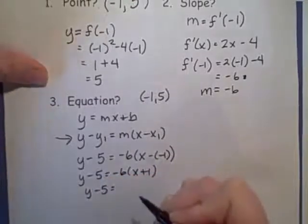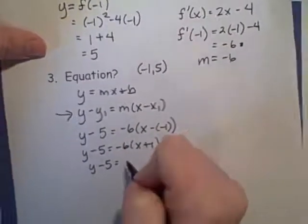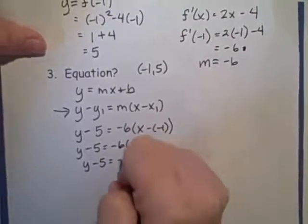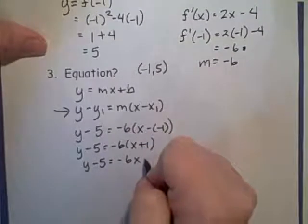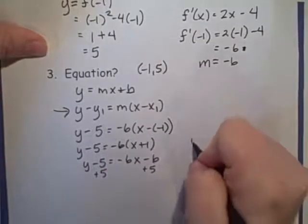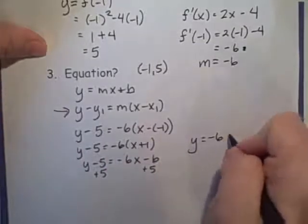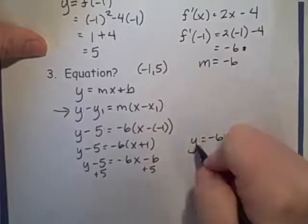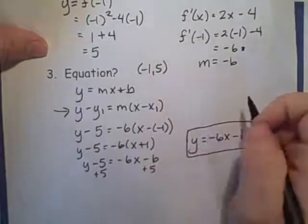Distribute that negative 6. And we get y minus 5 equals negative 6x minus 6, add 5, and I get y equals negative 6x minus 1. So that's the equation of our tangent line.